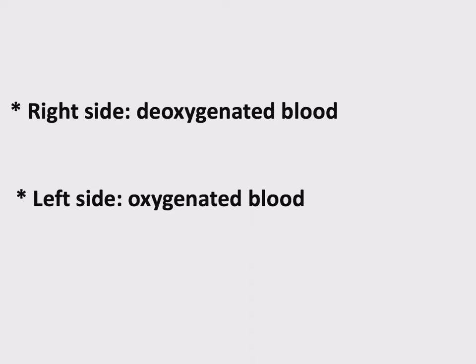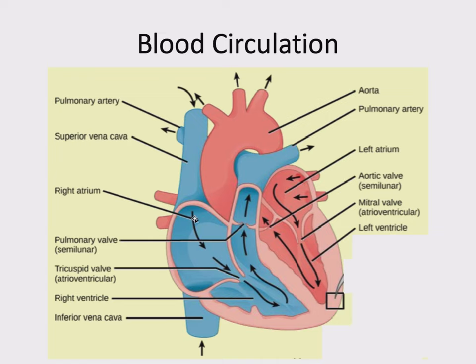Another thing to keep in mind that will help you remember what each of the four chambers does: blood enters through atria and exits through ventricles. Also keep this in mind: the right side always deals with deoxygenated blood, and the left side of the heart always deals with oxygenated blood. So the right side is always drawn blue, always dealing with deoxygenated. And the left side, whether it's receiving or sending out, is always dealing with oxygenated blood.